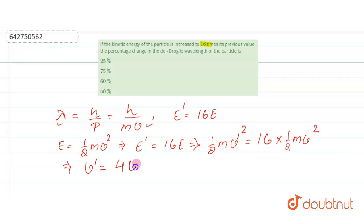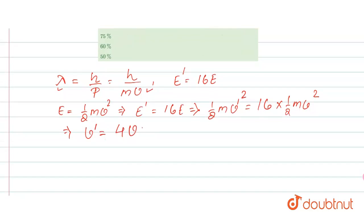v' should be four times that of v. So from this equation, you can calculate your λ'. So λ' should be equal to h divided by p', so this will be h divided by m, and